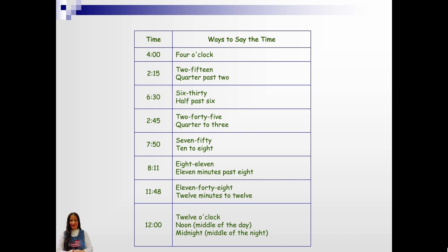Ways to say time. If you look at the first column, it would be 4 o'clock. Then look at the next one. 2:15 or a quarter past 2. The next one is 6:30 or half past 6. The next one is 2:45 or a quarter to 3. Then we have 7:50 or 10 to 8. Meaning 10 minutes to 8 o'clock. 8:11 or 11 minutes past 8. 11:48 or 12 minutes to 12.